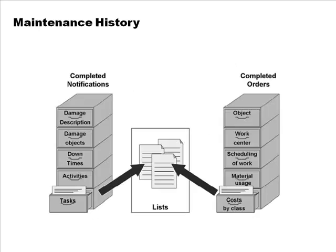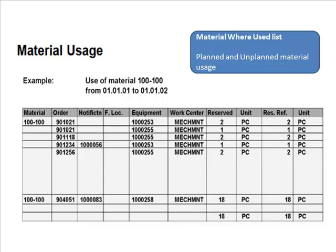Here we look at the reports available with plant maintenance. All completed notifications and completed orders are archived, and based on those you can generate all sorts of lists. For example, when you take a maintenance order you can look at the materials where-used list, which shows planned and unplanned use of materials — all consumptions in one place.